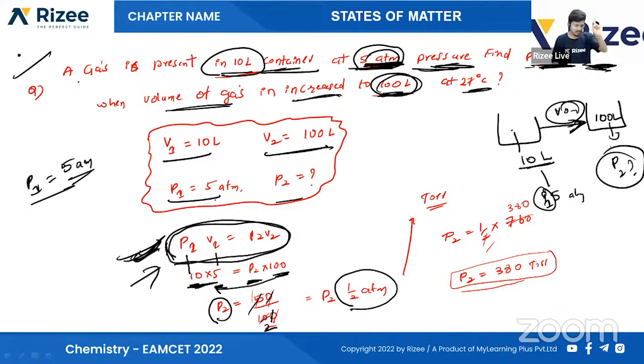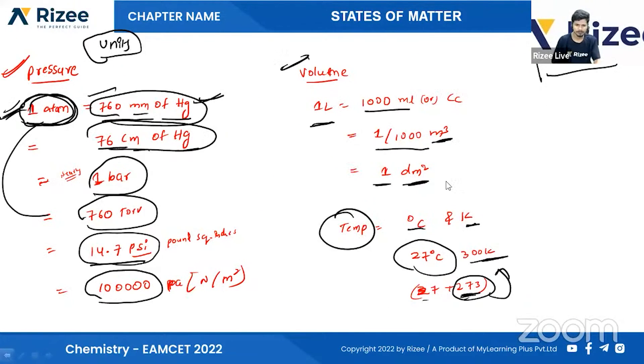Pressure is where? In Torr. The first pressure is in ATM, the next pressure is in Torr. The units decrease. So the pressure obviously decreases.